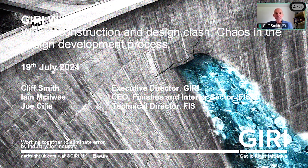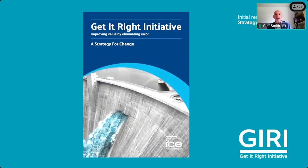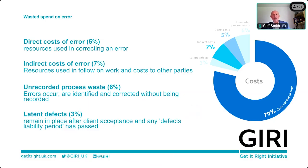In 2015 we carried out a research project looking to establish what is the root cause of error and how much we waste as an industry. We had contributions from many organisations who were willing to share their information. The chart shows the cumulative wasted spend on error is 21% of turnover: 5% direct costs, which we all see with NCRs and tablets.